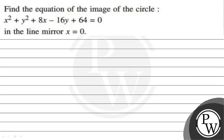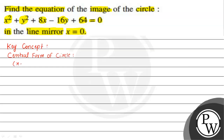Hello, let's read the given question. The question states: find the equation of the image of the circle x² + y² + 8x - 16y + 64 = 0 in the line mirror x = 0. The key concept to solve this question is the central form of the circle, which is (x - h)² + (y - k)² = r².